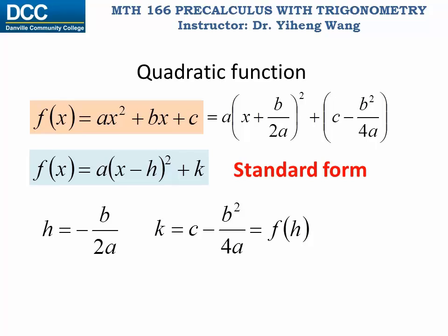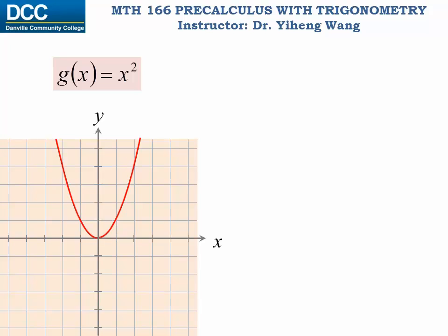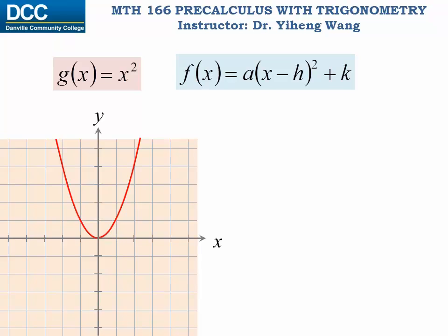Note that k also equals f(h), because k is the function value evaluated at x = h. The reason we want this standard form is that we can easily sketch the quadratic function from it. Recall that we learned the graph of the parent function g(x) = x², the squaring function, and that we can transform it into the derived function f(x) = a(x − h)² + k by following several transformation rules.